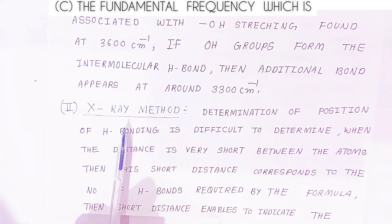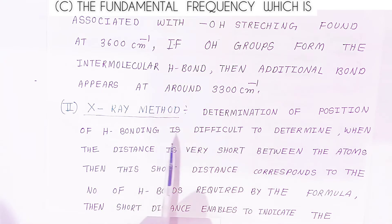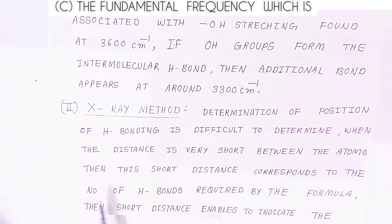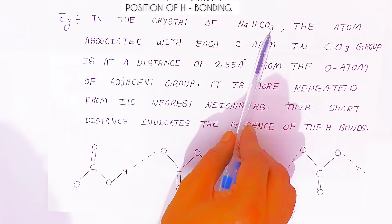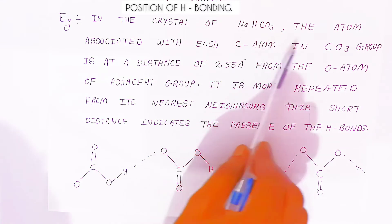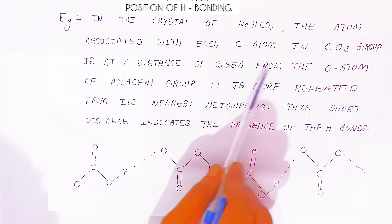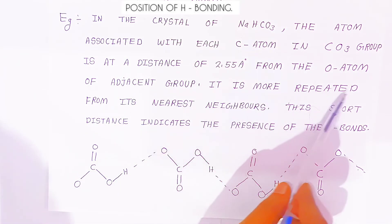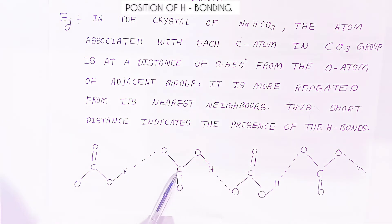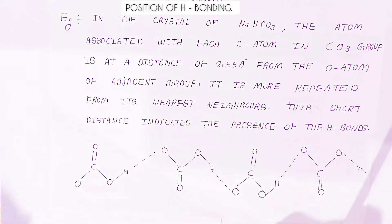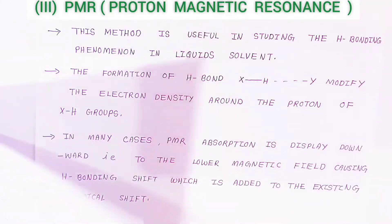Another detection method is the X-ray method. Determining the position of hydrogen bonding by X-ray is difficult when the distance between atoms is very short. This short distance corresponds to the number of hydrogen bonds as required by the formula. For example, in crystals of sodium bicarbonate, the carbon atom in the carbonate group is at a distance of 2.55 Å from the oxygen atom of the adjacent group — shorter than the nearest neighbors. This short distance indicates the presence of hydrogen bonding.